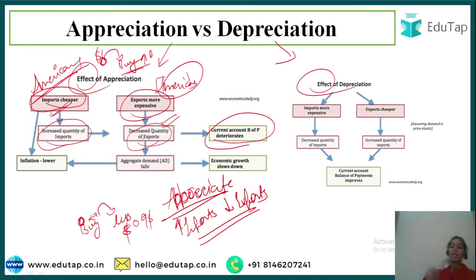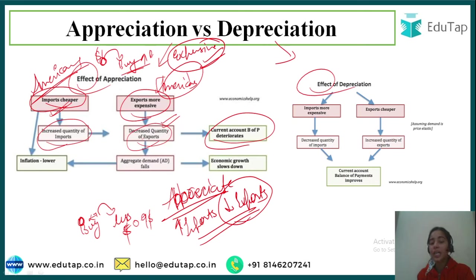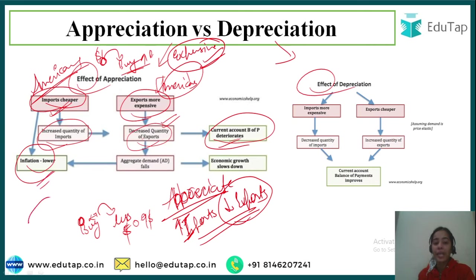When a currency appreciates, imports increase and exports decrease. The appreciated currency has become expensive for the other country, so goods from that country are costly and exports decrease. The current account balance of payment can deteriorate as exports fall and imports rise. However, inflation will lower in the appreciating country because they are receiving more goods from the other country.